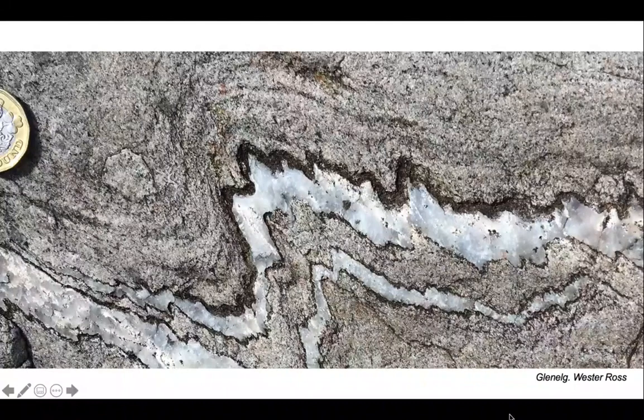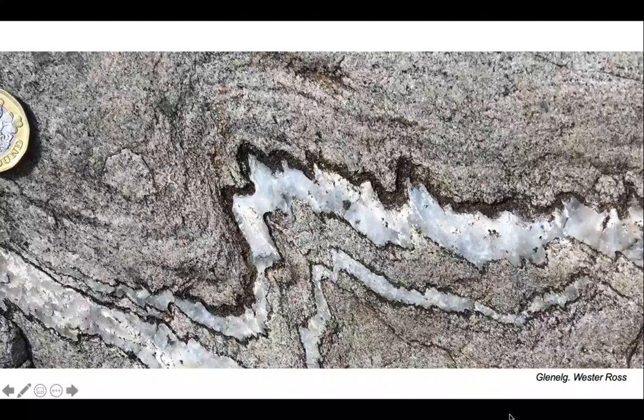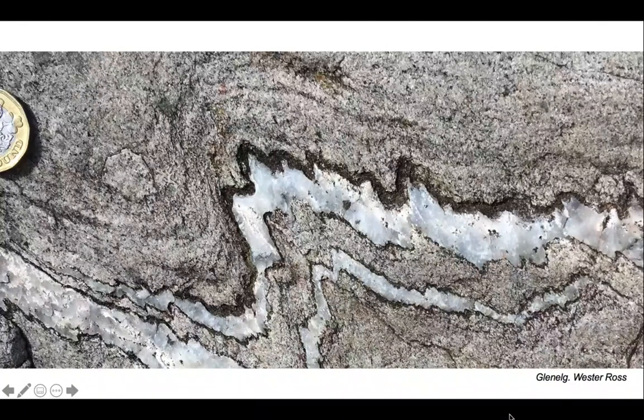Identifying minor fold asymmetries in outcrops like this help us to place these outcrops in the context of larger scale folds. That's vergence.